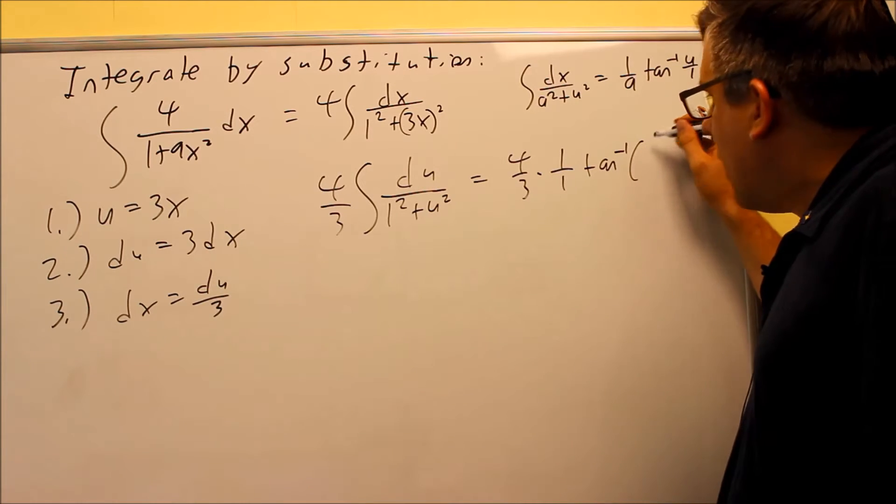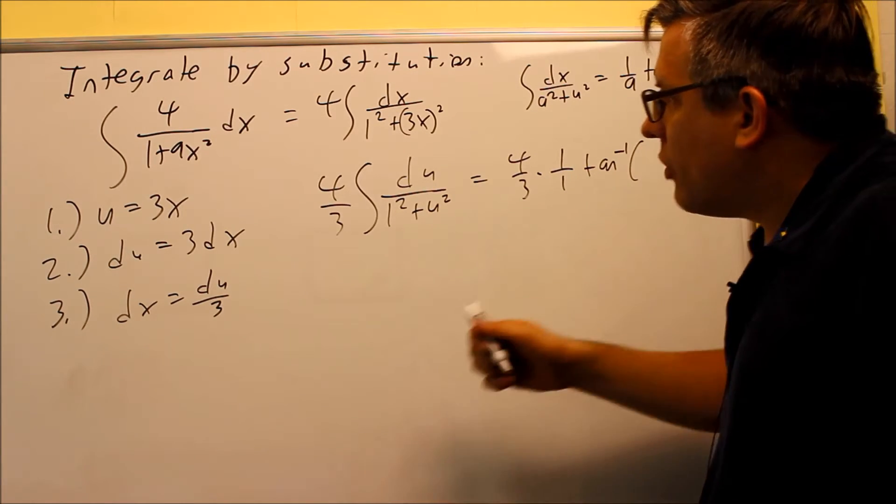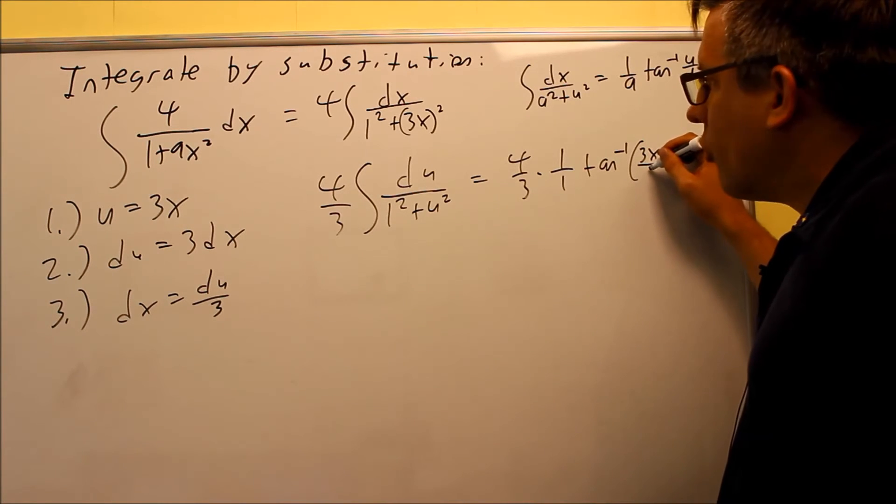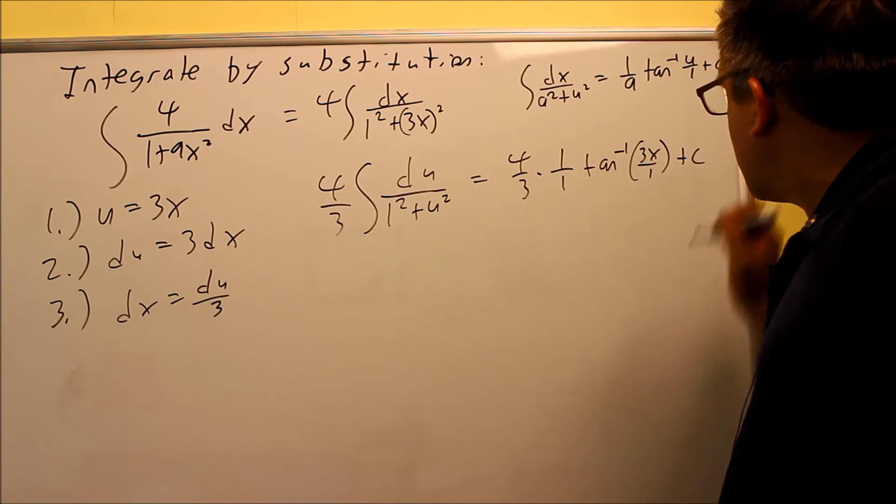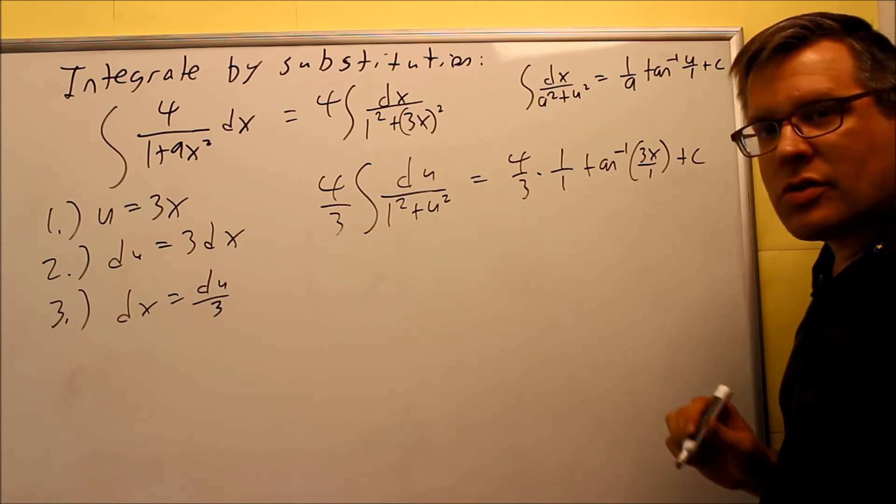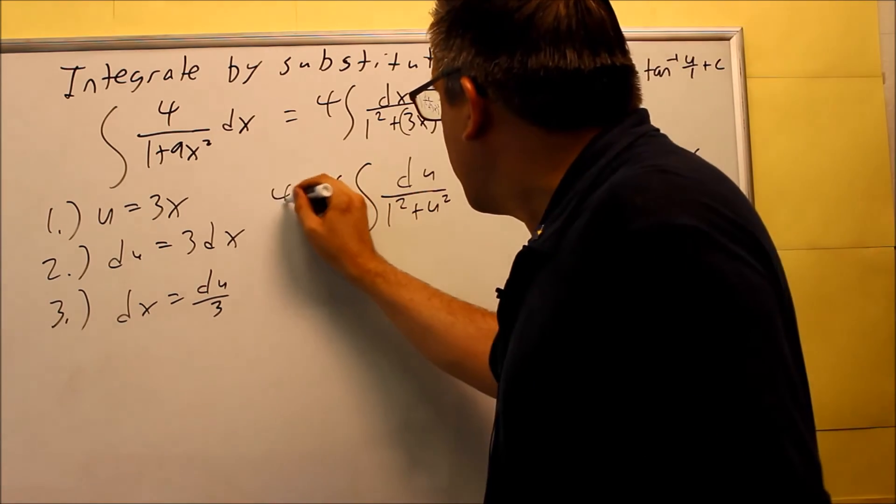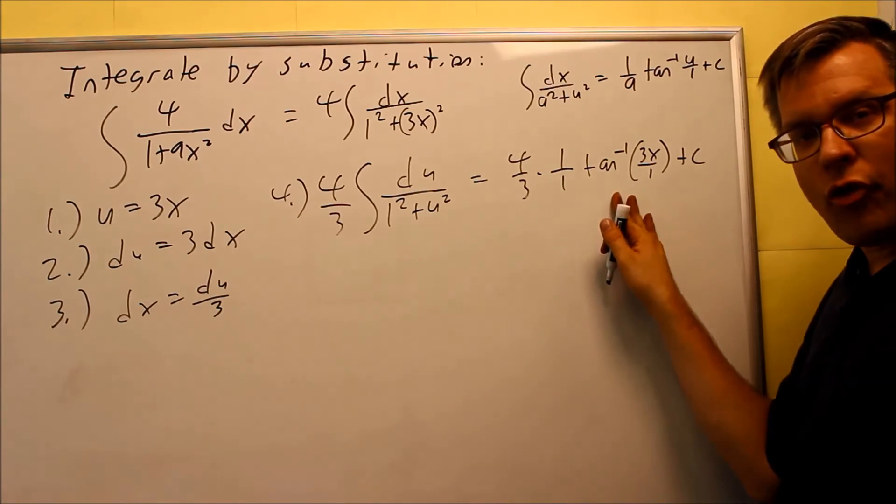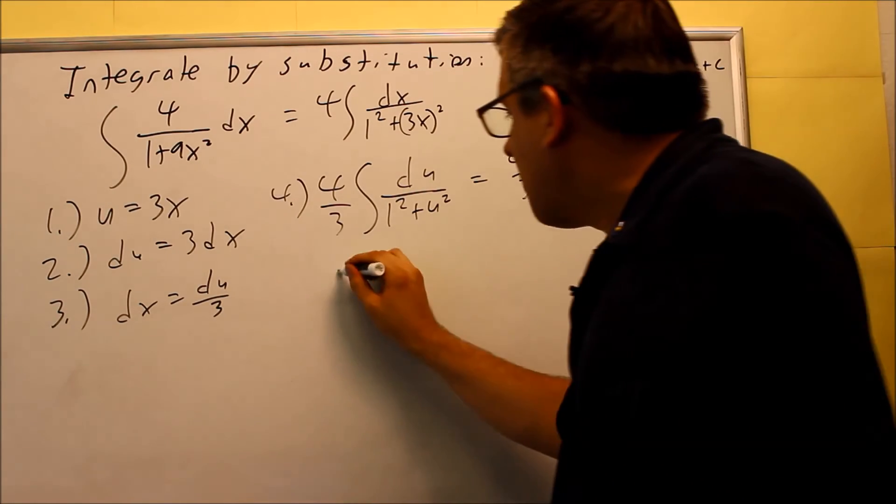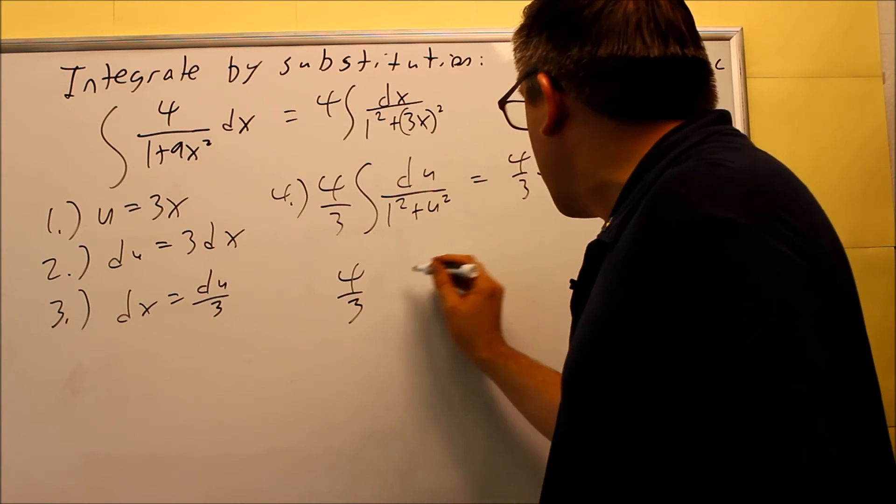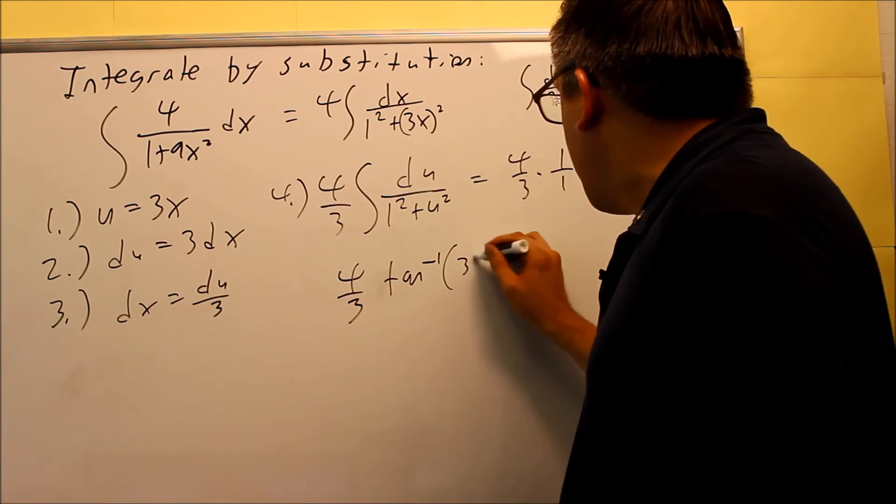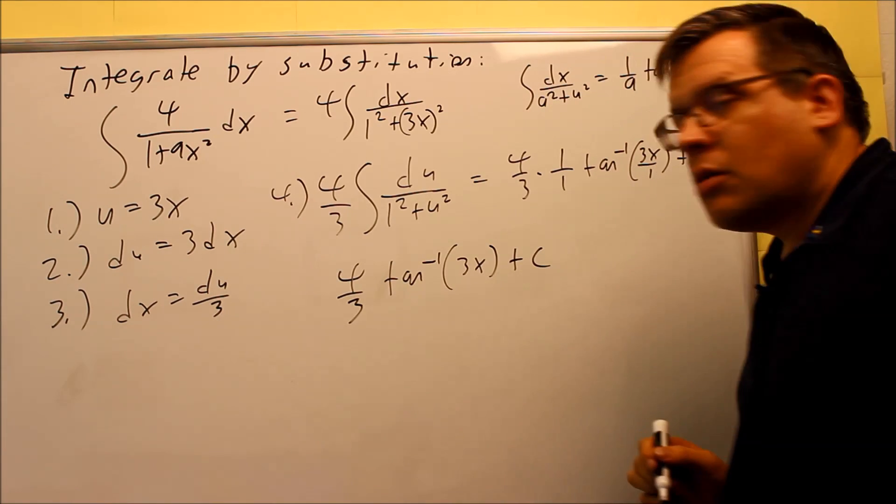That's going to be, in this case, the u that we have is 3x. So I'm going to put 3x there over 1, and then plus c. And then from here I can just simplify it. So this part right here is really my step number 4. This is my integration part because I actually used the formula to integrate that. And my final answer is going to be 4 thirds inverse tangent of 3x plus c.